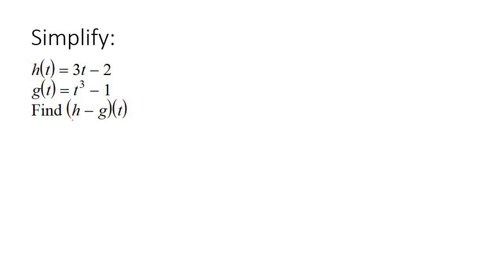And what they want us to do here is they just want us to subtract them. So they want us to take h minus g of t, which equals h's equation, which is 3t minus 2, subtract, and then g's equation.